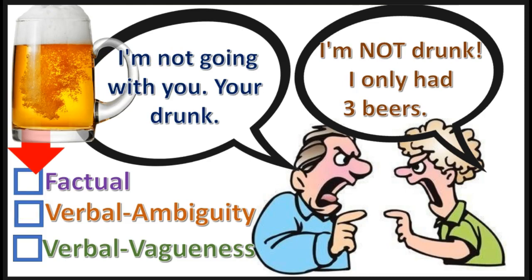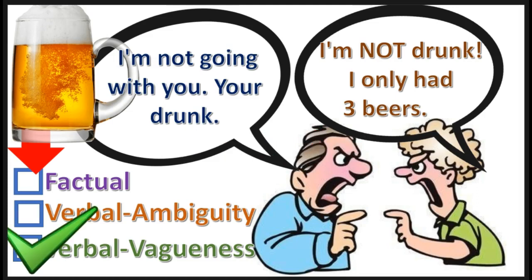Next practice problem — select the correct answer. Press pause, the answer is in three, two, one. That's correct — verbal dispute over the vagueness of the word 'drunk'.